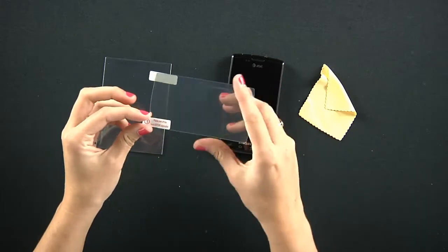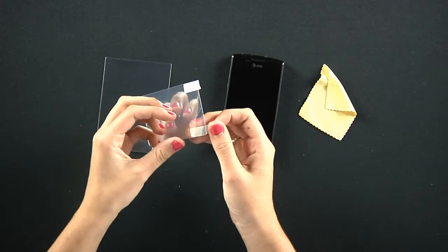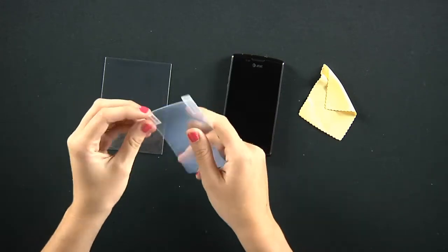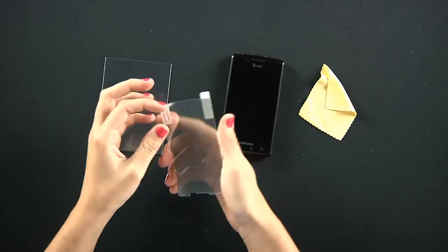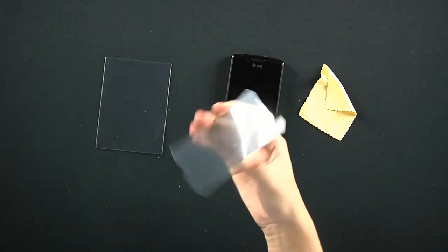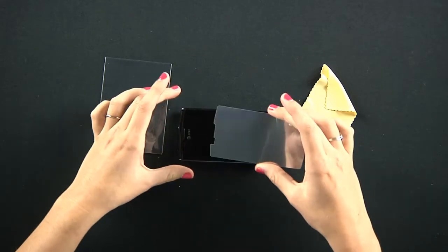On one side you have, or on each side I should say you have little films that are on either side of the actual screen protector. Number one asks you to please pull this back and take it off and that's going to give you the adhesive side to the screen protector.